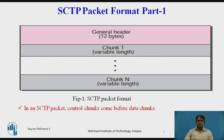The figure shows the general format of an SCTP packet. An SCTP packet has a mandatory general header and a set of blocks called chunks. There are two types of chunks: control chunks and data chunks. A control chunk controls and maintains the association, while a data chunk carries user data. In a packet, the control chunks come before the data chunks.